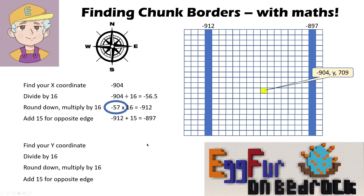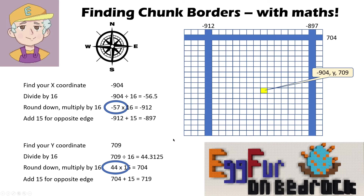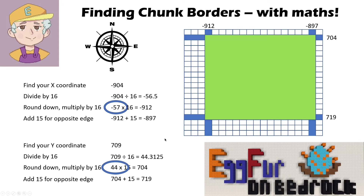Now for the z coordinate — it was 709, remember. Divided by 16, this time I get a positive, so that's 44 point something. When I round that number down I can just drop the decimal, so it becomes 44, and I get 704 as my answer. That is one of my chunk edges. Add 15 again like we did before and I get 719.